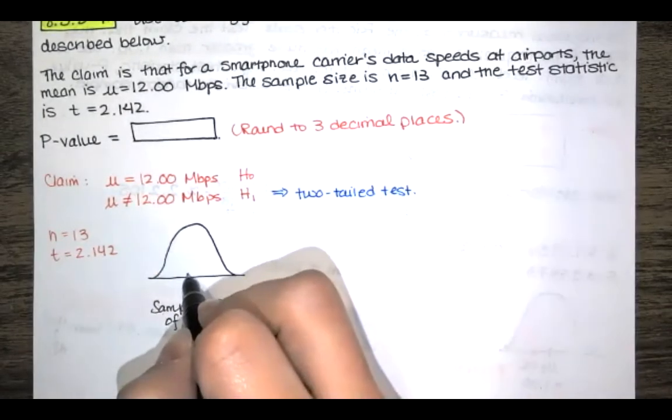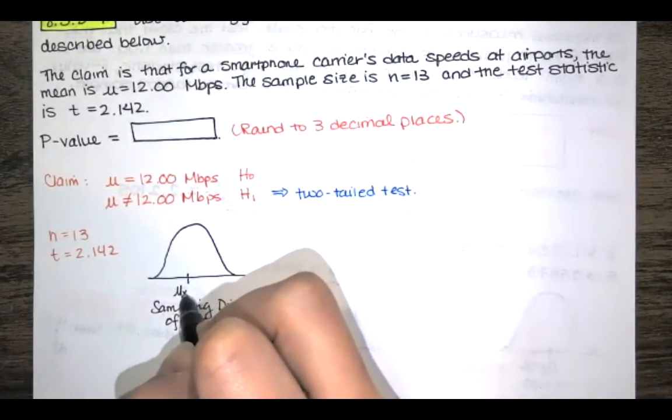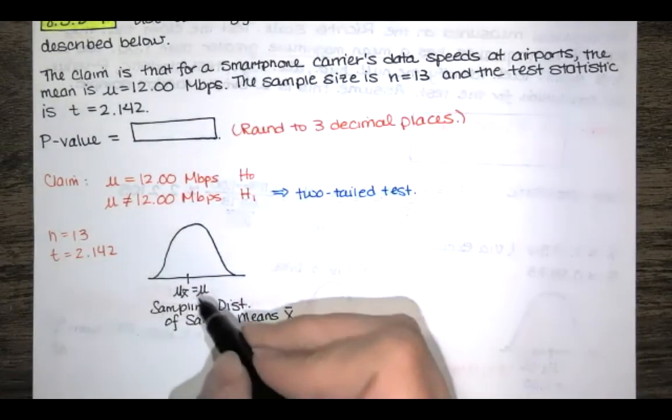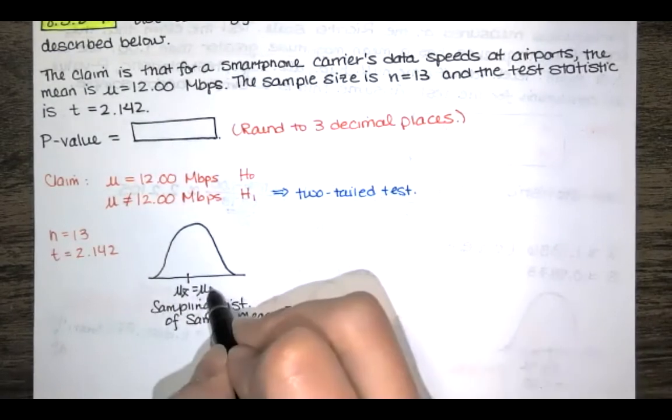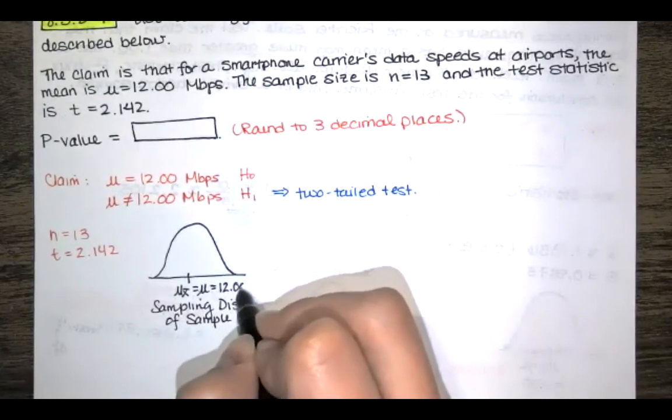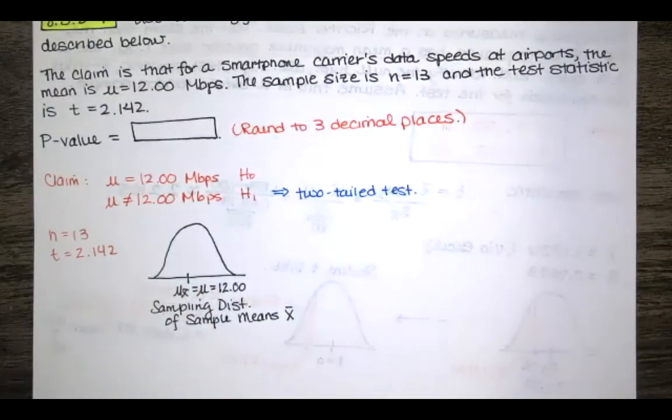Back in 6.3 we said that the mean of the sample means is equal to that true population mean and when we draw this sampling distribution we're assuming that that null hypothesis is true. So we're assuming that the mean of the sample means is the population mean which is 12.00